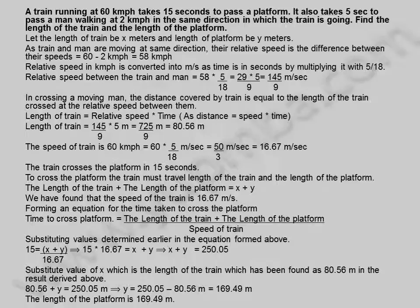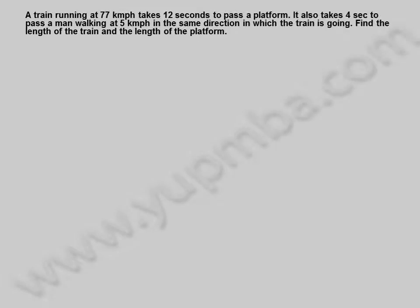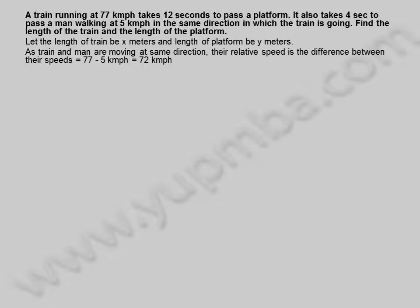Let us see another example. A train running at 77 kilometers per hour takes 12 seconds to pass a platform. It also takes 4 seconds to pass a man walking at 5 kilometers per hour in the same direction in which the train is going. Find the length of the train and the length of the platform. Let the length of train be x meters and length of platform be y meters.